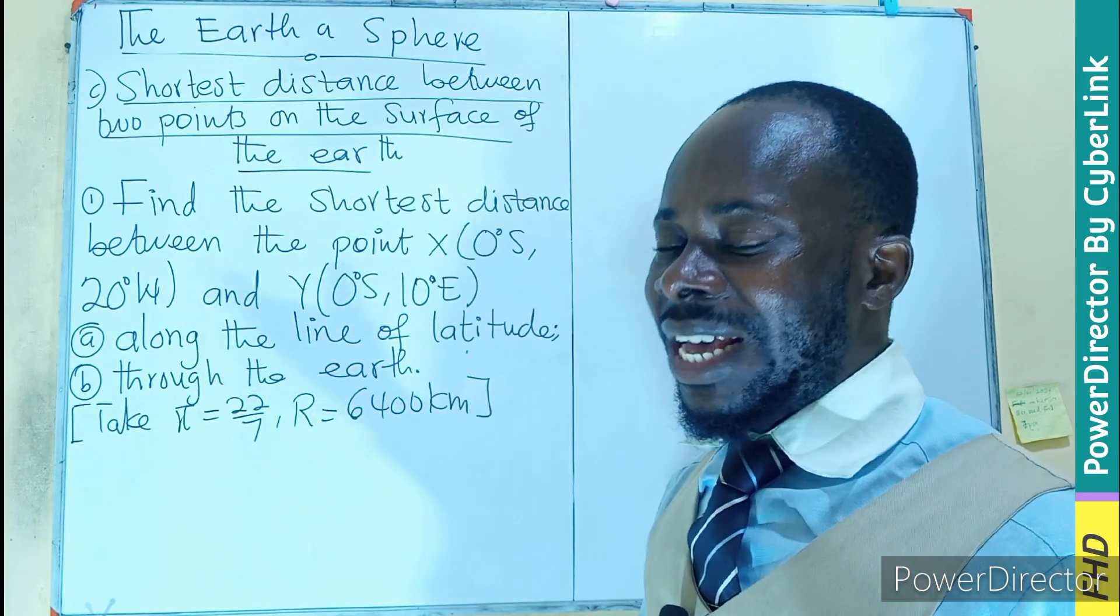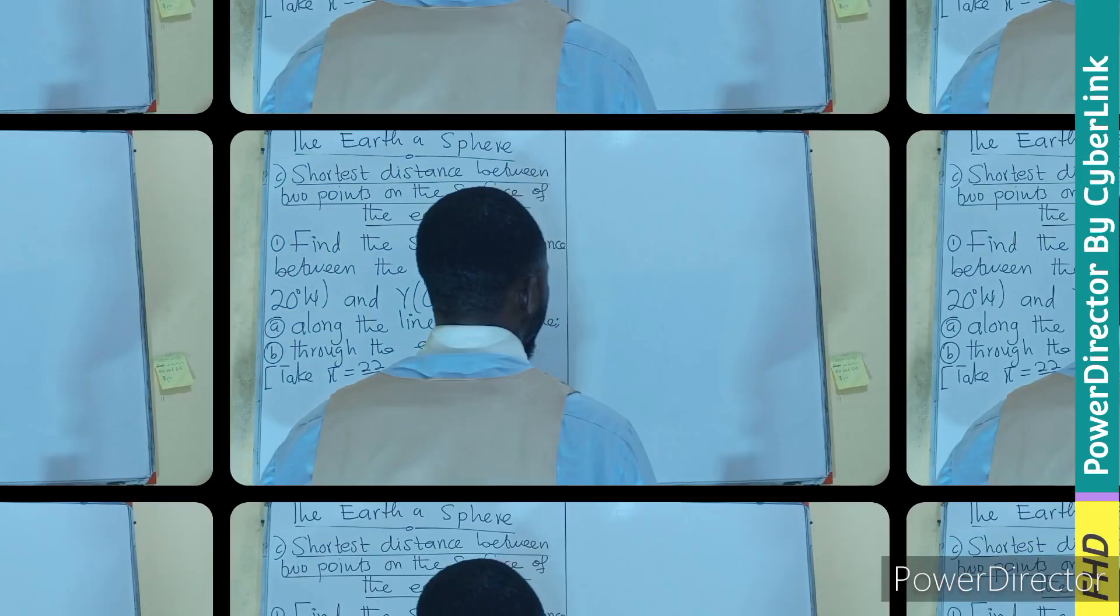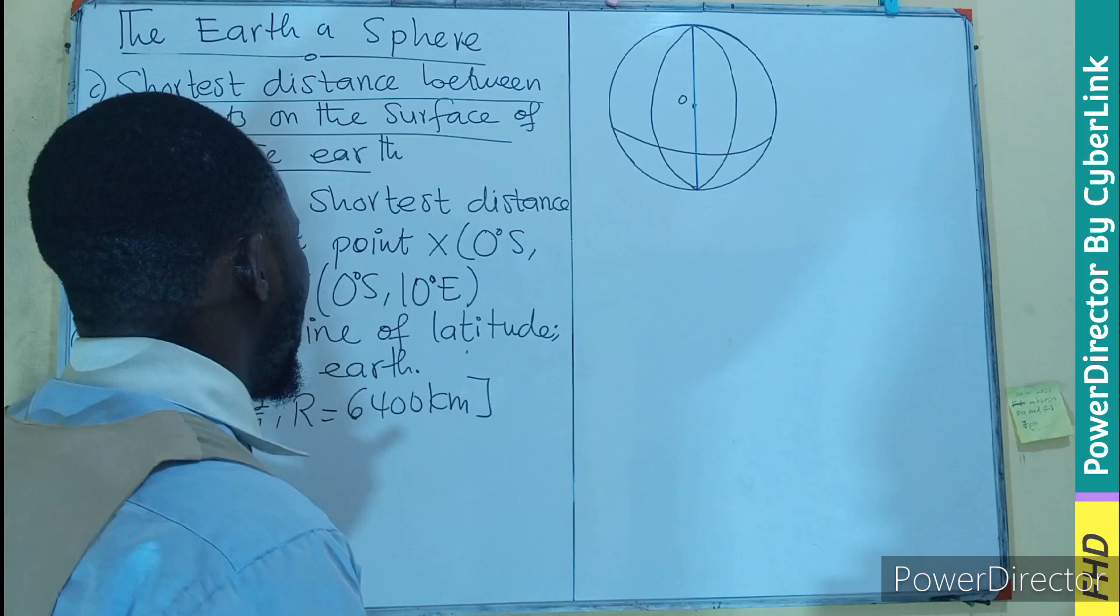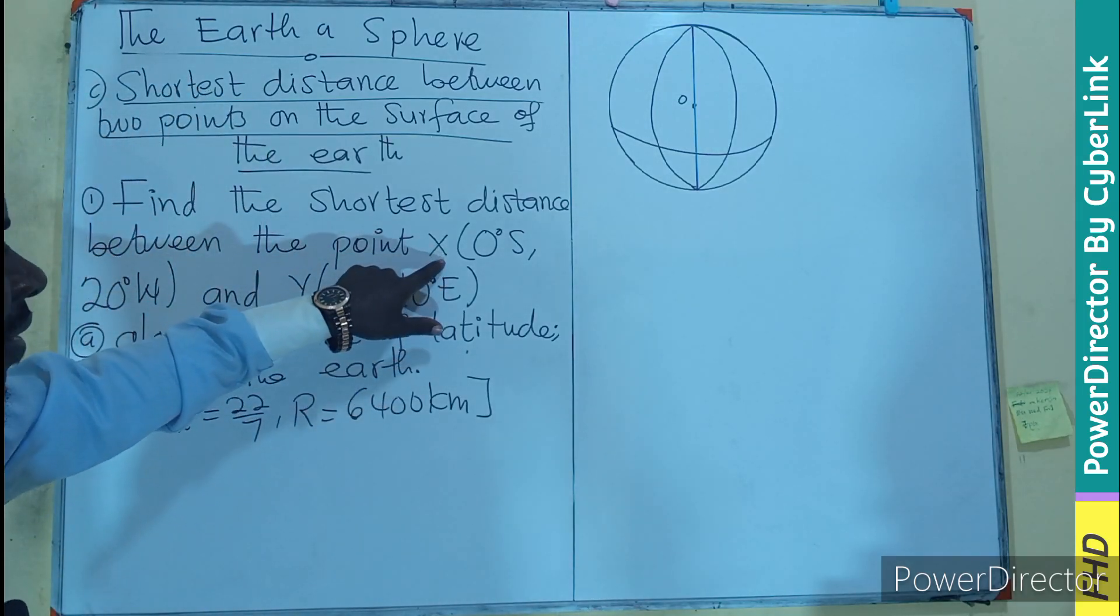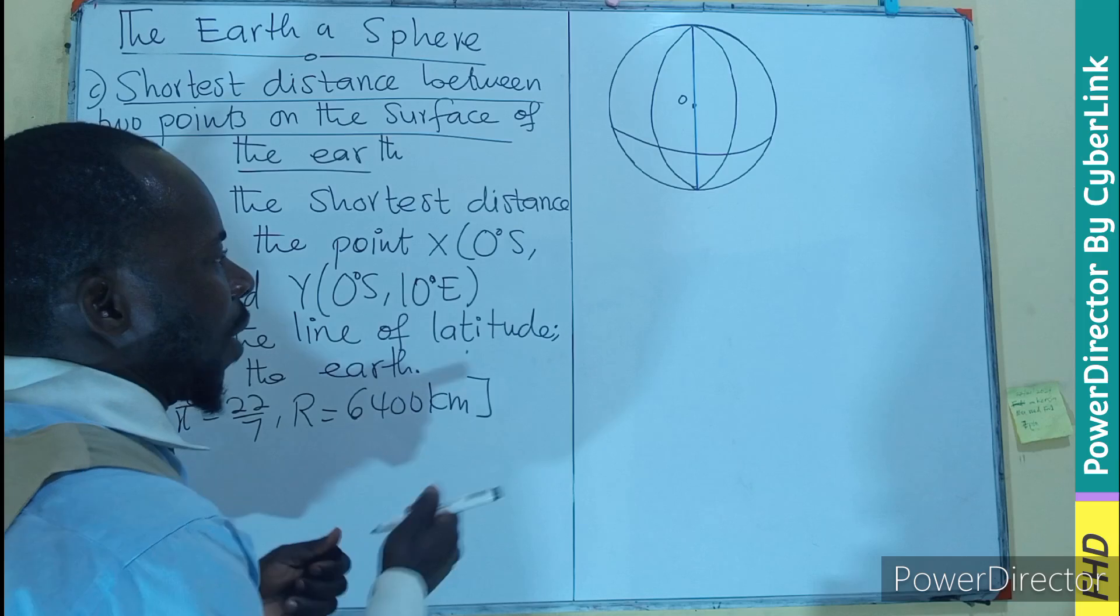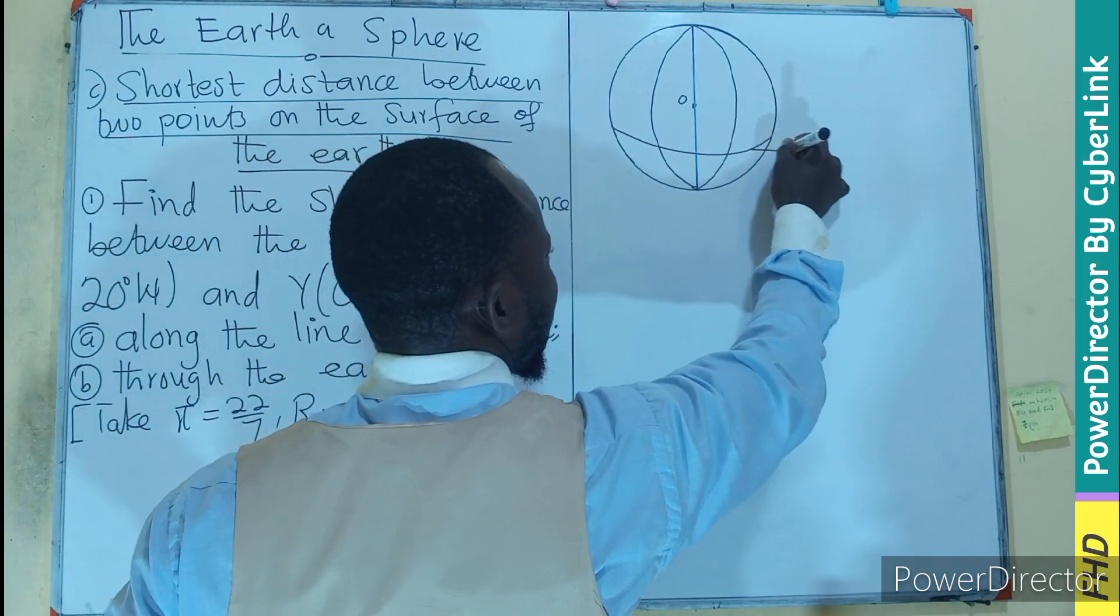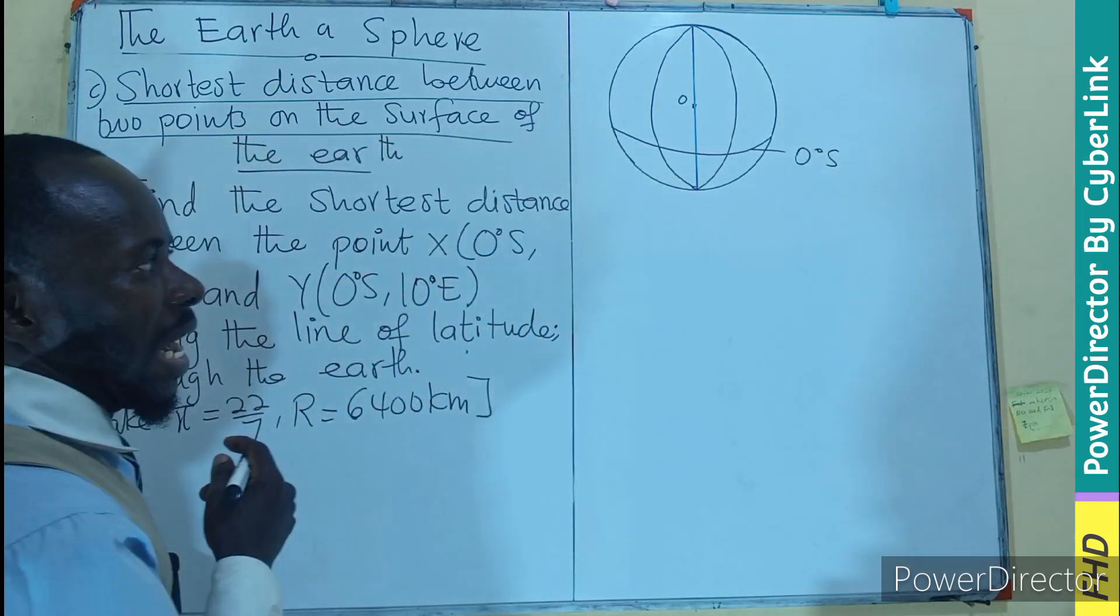So let's make a sketch. Remember, we need to make a sketch of the sphere and put the distances into it. Okay, so the diagram is going to be like this, where we are going to locate the points. This is our latitude 0 degrees south.